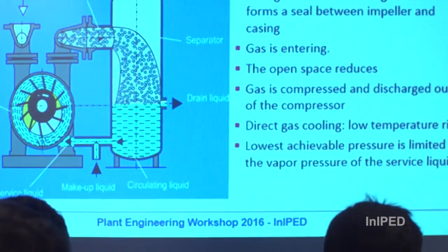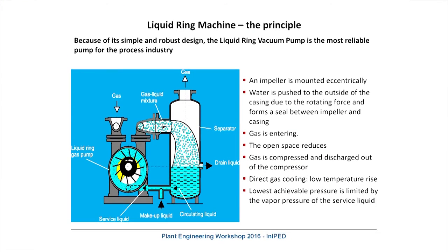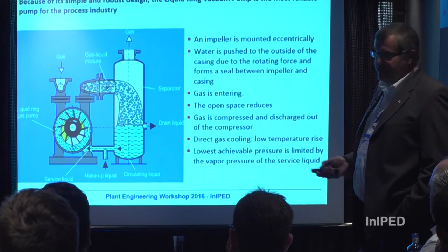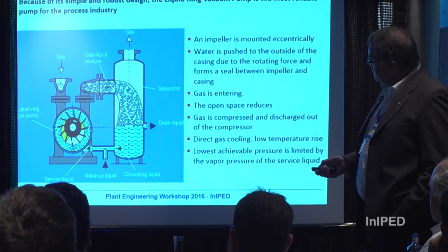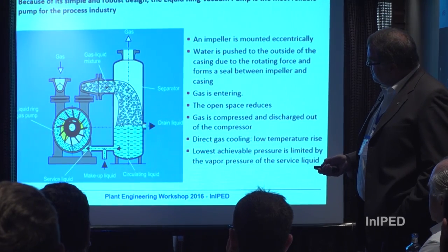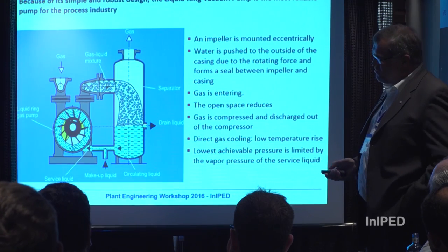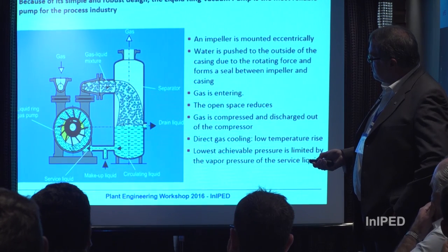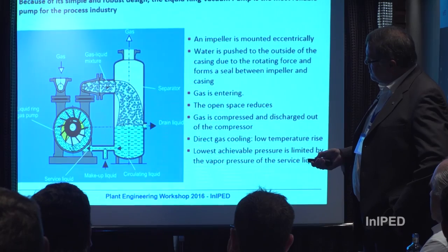Working principle. A very simple picture shows how the machine runs. An impeller is mounted eccentrically in the casing, and due to the rotating forces, the service liquid is pushed into a ring concentric to the casing. When rotating, there is an opening volume between the impeller blades, the liquid ring, and the hub — so in this stage the gas is sucked in due to the increasing volume. Then the gas is compressed, and as the gap gets closer and closer, the gas is discharged.